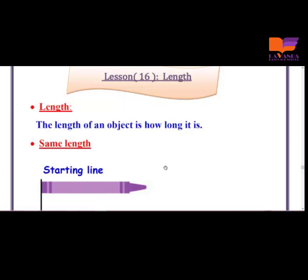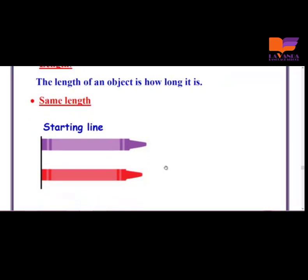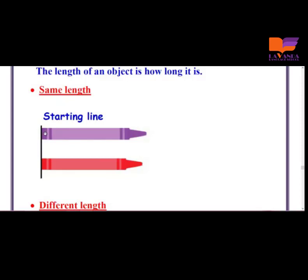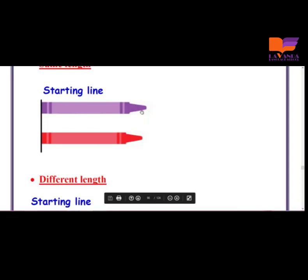I have here an example to compare between two crayons. If I want to compare between any two objects, I have to make the same starting point. Here the two crayons have the same starting line, and after we compare between them, we found that they have also the same ending point. So, if those crayons have the same ending point, they have the same length.